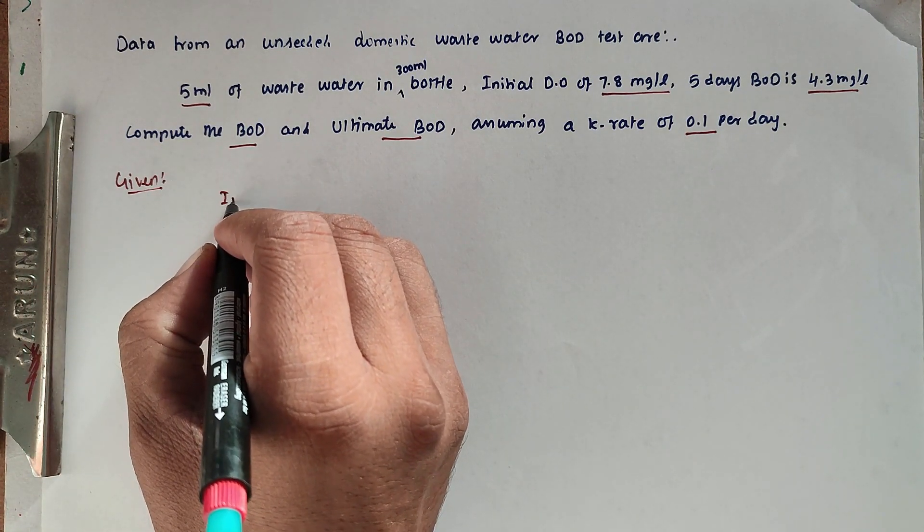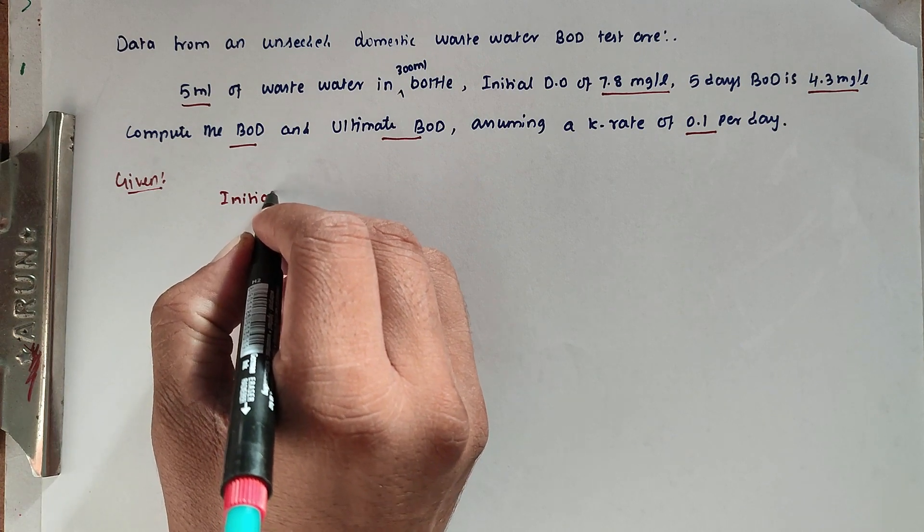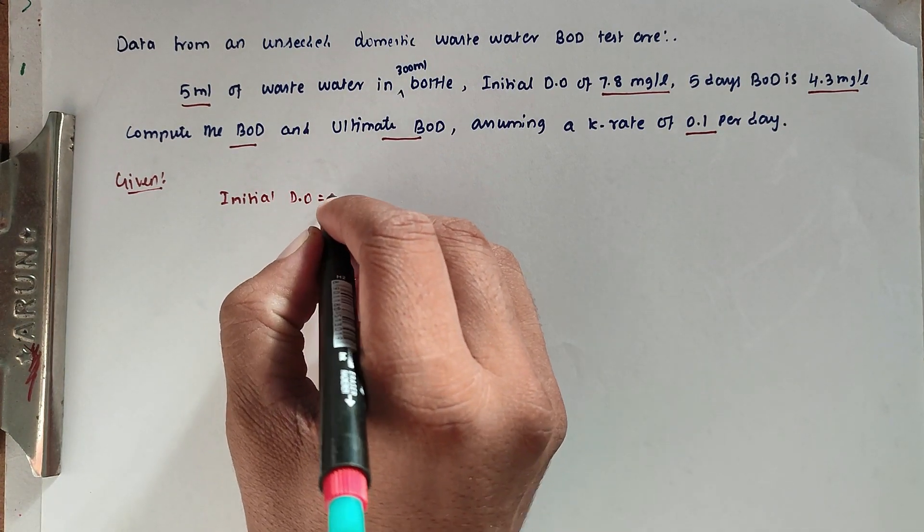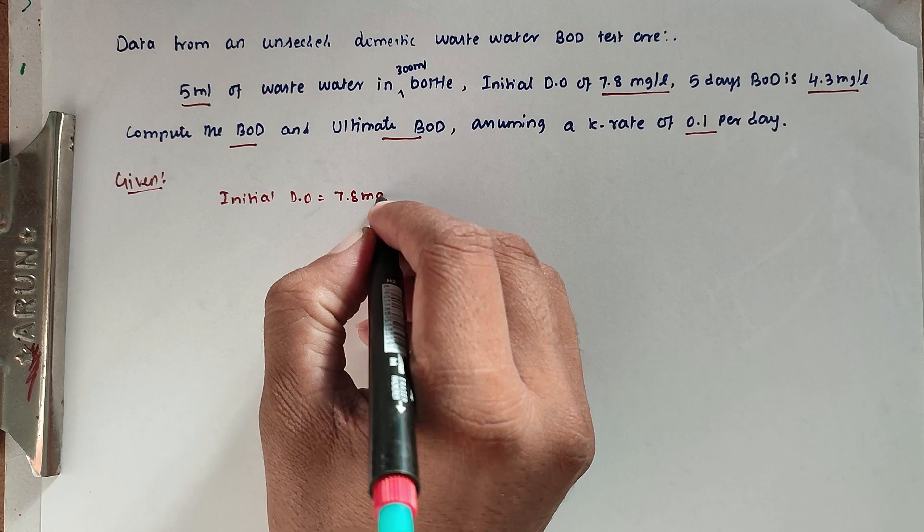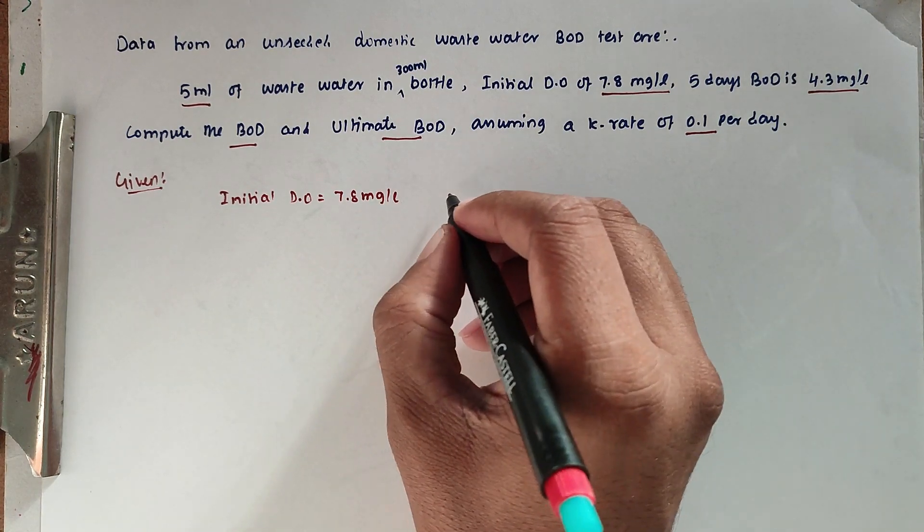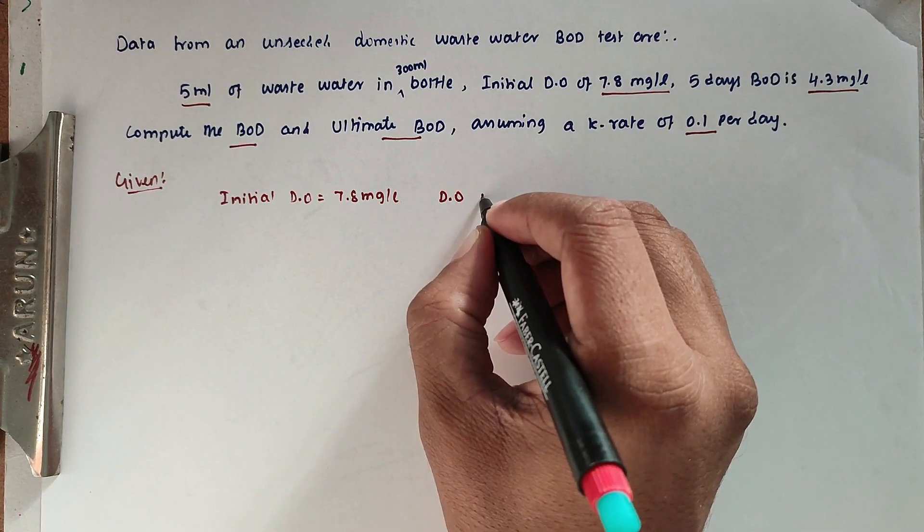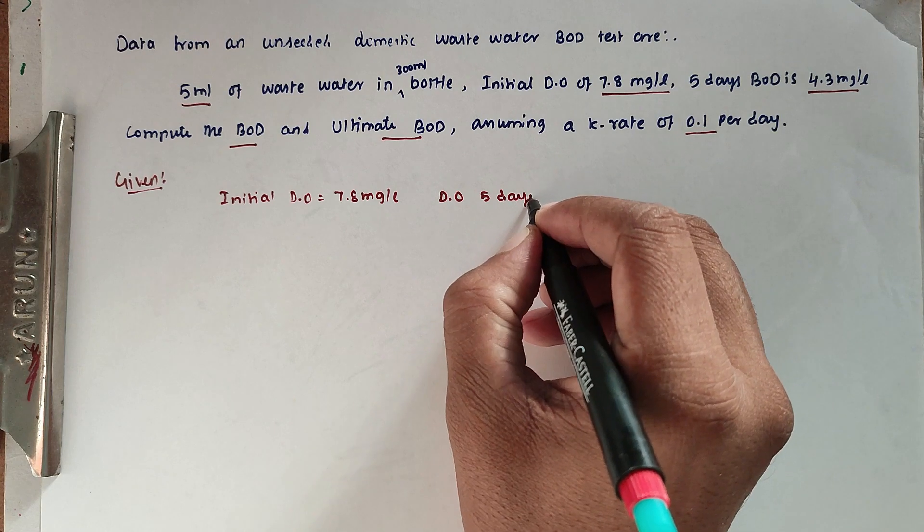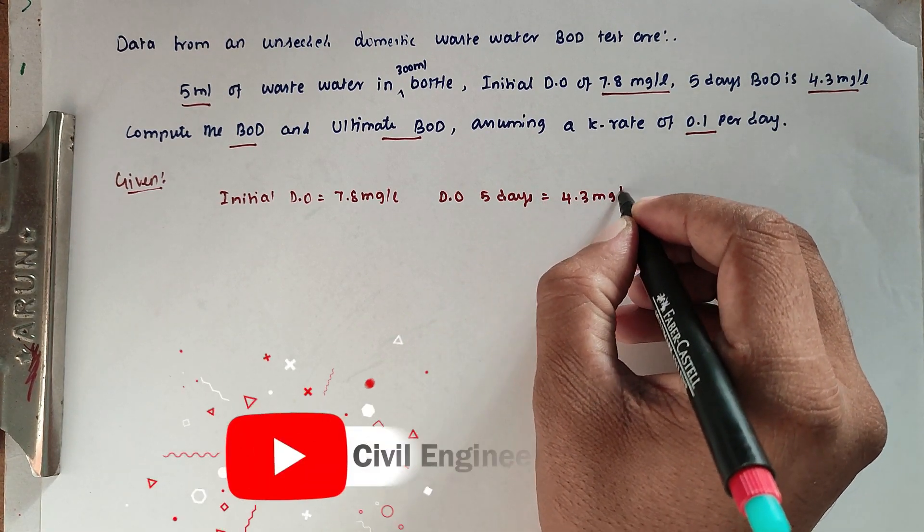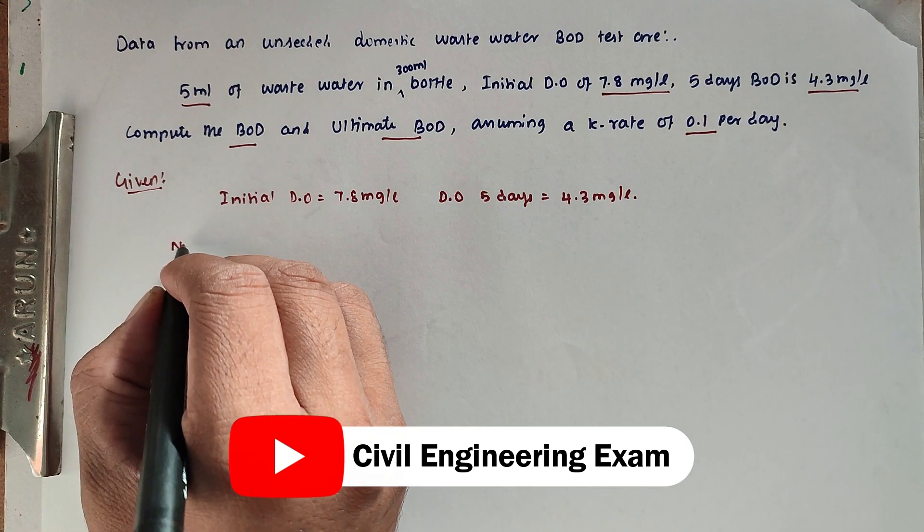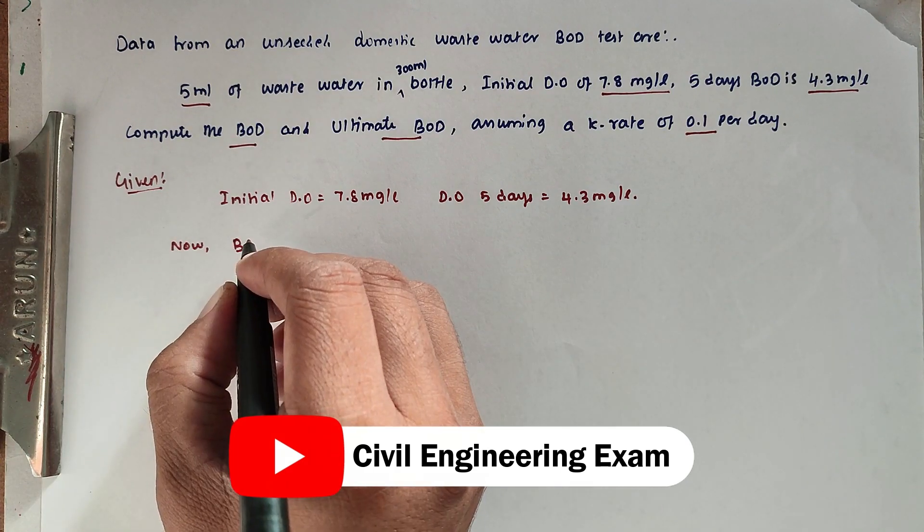Given: initial DO is 7.8 mg/L, and dissolved oxygen after 5 days is 4.3 mg/L.